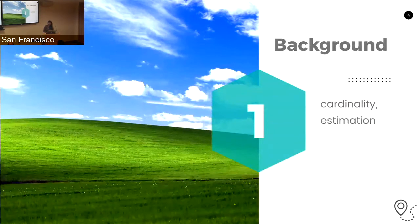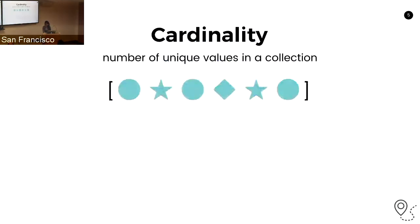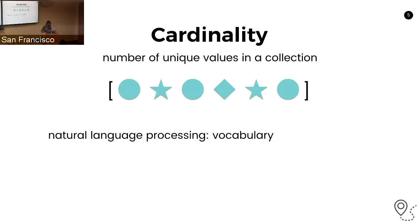The background: we'll talk about what the cardinality problem is and introduce estimation. The cardinality of a collection is the number of unique elements in it. This set of shapes has a cardinality of three — there is a circle, a star, and a diamond. Measuring cardinality can be useful in natural language processing — understanding the number of unique words Shakespeare uses tells you something about his vocabulary.